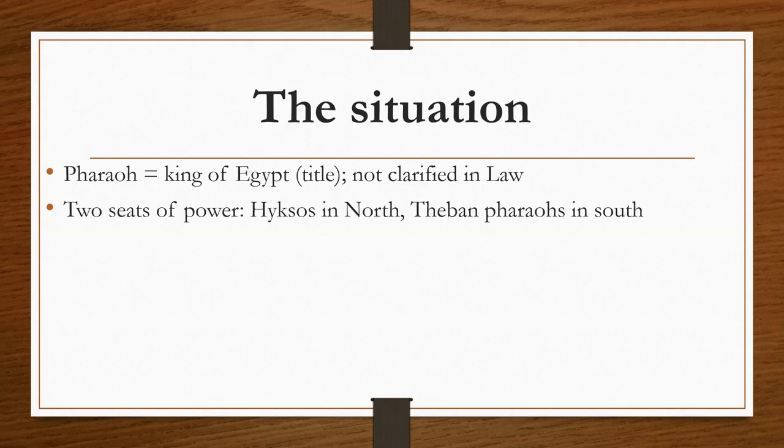But the more they were oppressed, the more they multiplied and spread abroad, and the Egyptians were in dread of Israel, so they ruthlessly made them work as slaves. Is this connected with the Hyksos, or is it saying more broadly that both north and south started persecuting them? We don't really know. They made their lives bitter with hard service in mortar and brick and all kinds of field work. Then 'the king of Egypt' — are we talking about the same king? Once again, we don't know.